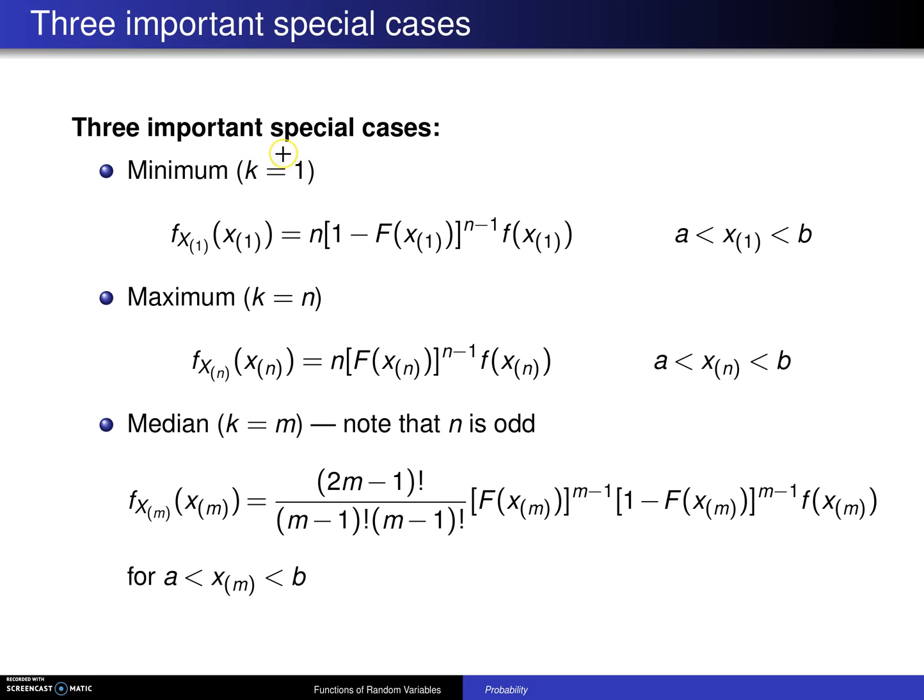The order statistic of interest is the k equal 1 order statistic, that is x sub 1. If you take that theorem from two slides back and you simply plug in k equals 1,